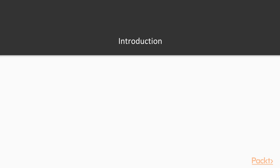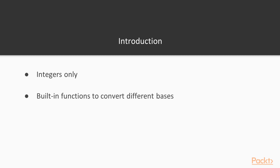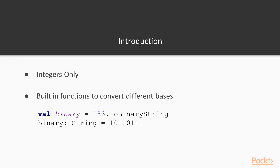We want to keep things simple for our first section, so we will only deal with integers, as floating point conversion is a bit more involved. It is important to note that most languages have built-in functions to convert from one base to another. For example, in Scala, converting a decimal to binary can be done using a built-in function — here we have the non-primitive Scala integer 183, and the Scala class contains a toBinaryString function which does this for us. The idea is to implement this operation ourselves without using any built-in functions.